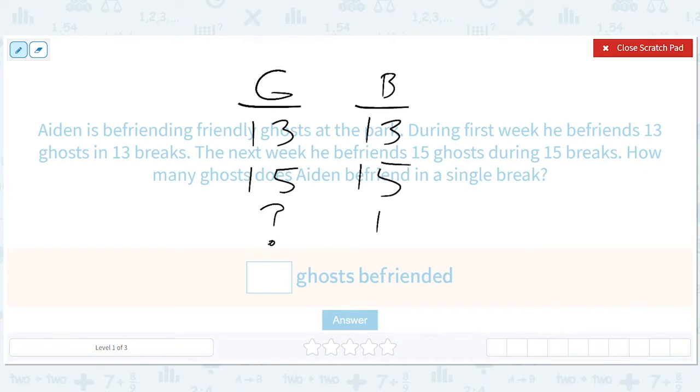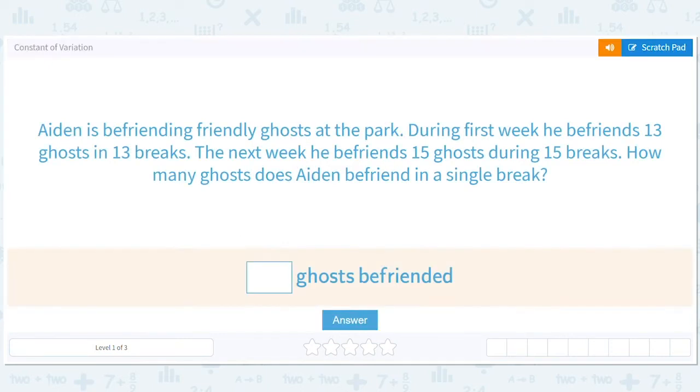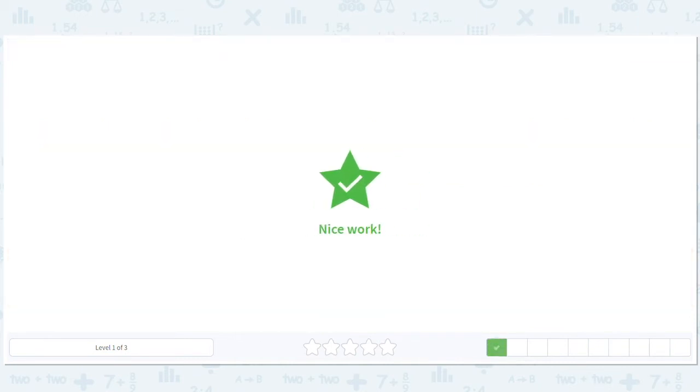The way it works is you find out what number you have to multiply this by the right to get the left or the left to get the right. In this case, it's times one. So here it's just one. You could see that the number of ghosts and number of breaks are the same. So you could have probably just said one.